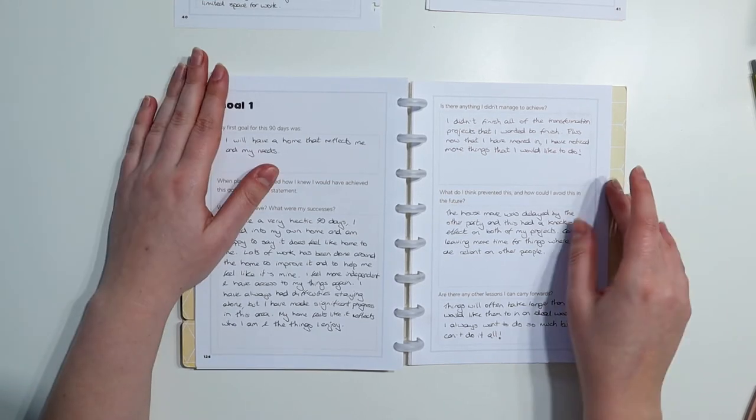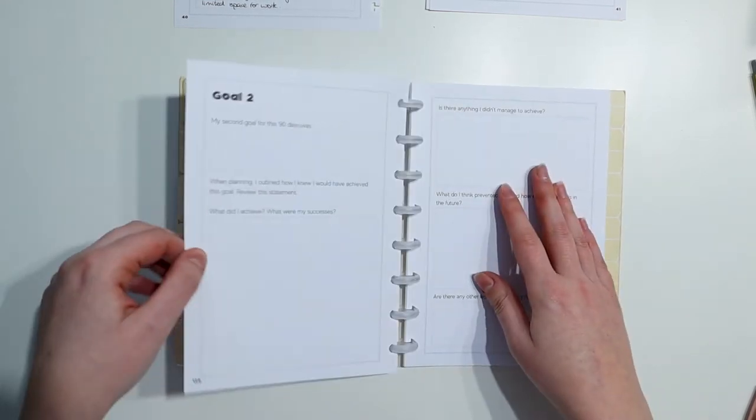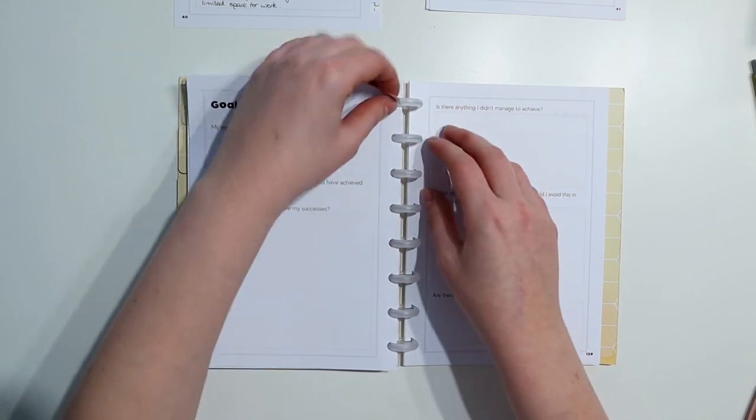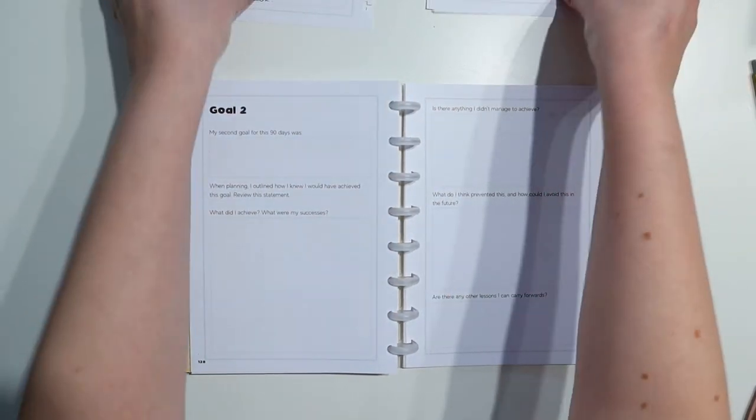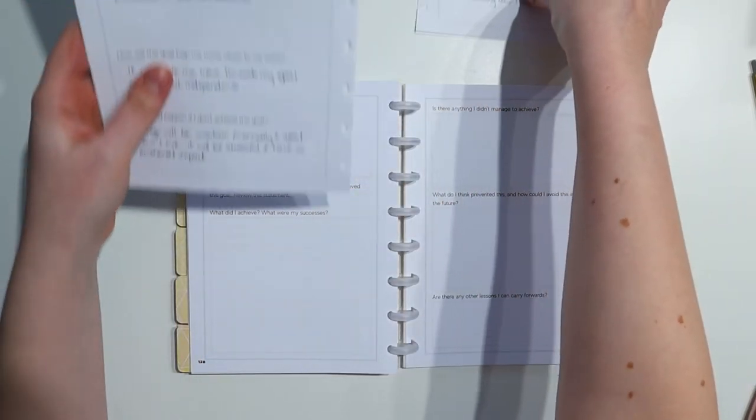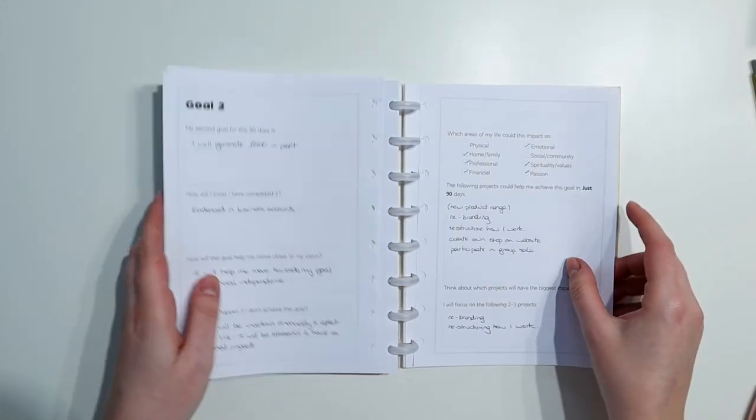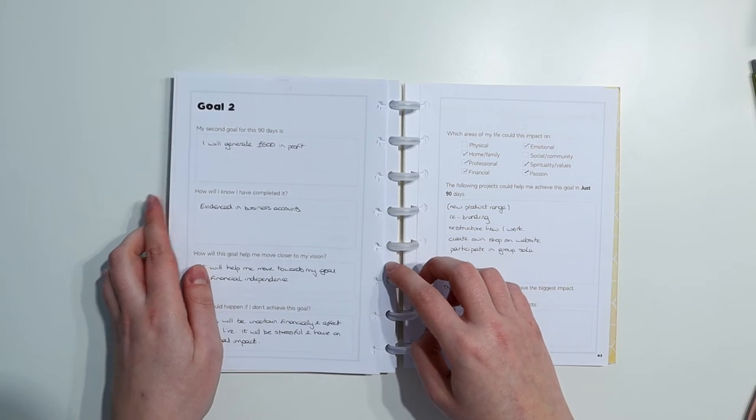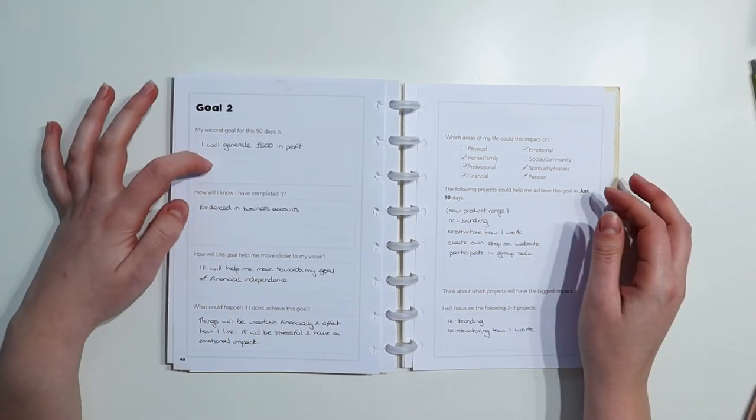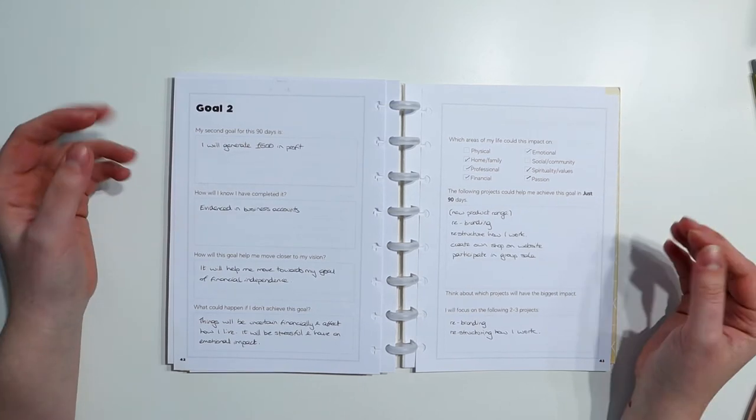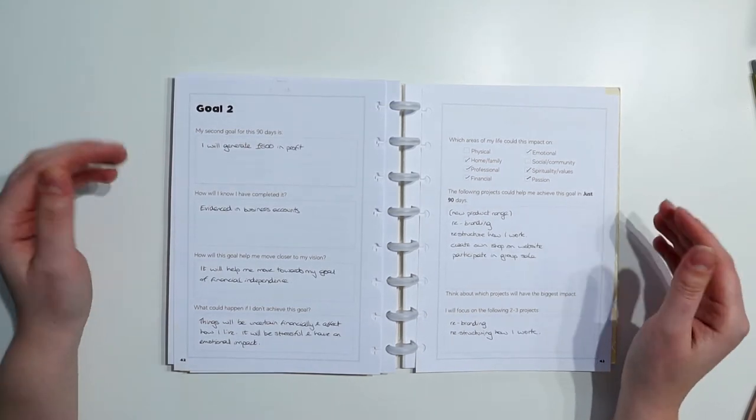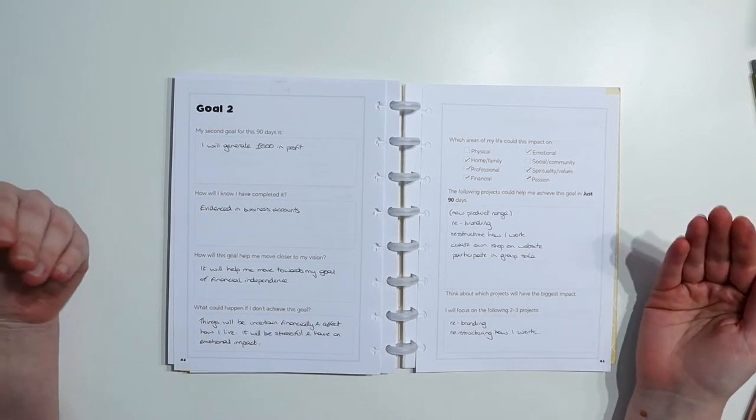So I've just put that there as a reminder to myself that it's all right. You didn't have to do all these things in this 90-day period. But the fact is you've got most of them done, so well done you. So that's what I've said for goal one. So overall, I'm very happy with that. So goal number two. So if I give you a quick recap on what goal number two was, I have it here. Now I know for a fact this has not happened. So I will generate £600 in profit. This was a business goal.